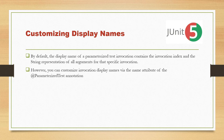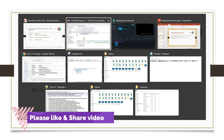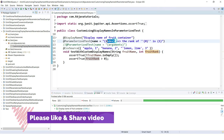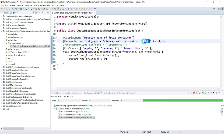The following placeholders are supported with a custom display name in @ParameterizedTest: {index} — the current invocation index starting from one; and individual argument placeholders like {0}, {1}, {2}, etc., to access individual arguments as we have seen.